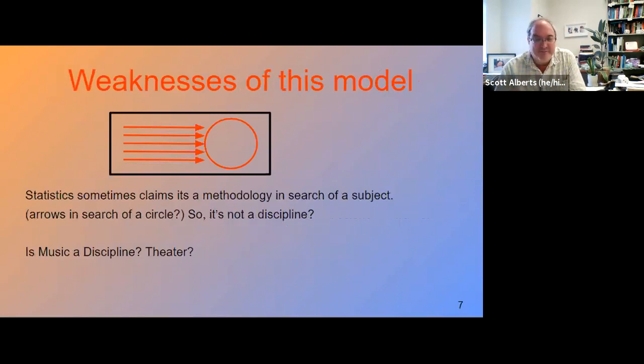We know that there are some weaknesses to the model. For instance, we in statistics, we sometimes say that we're a methodology that goes around looking for a subject. So I learned cool statistics techniques. I can use my ANOVA analysis to study biology or health data, or I can use that same ANOVA model to study economics or finance data. So maybe we really are a set of arrows that don't have a circle. Individuals within statistics might have a circle that they focus on a subject area, but maybe the field itself doesn't have one. Does that mean we're not a discipline? That kind of makes me sad because I think I'm in a field. What about things like music or theater? We certainly treat them as disciplines, but do they have a methodology? Do they have an approach like this? Whether it makes sense or not, we're going to use this quick model so that we can think about some extensions and how we get to interdisciplinary thinking from here.